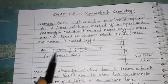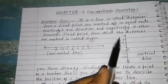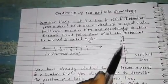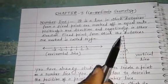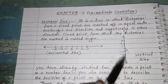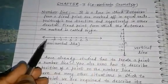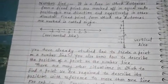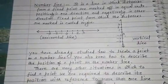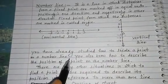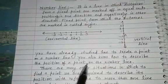You are already aware with the number line. This is also a number line — the direction above shows the positive direction and below is the negative direction, and this is called the vertical line. This is called the horizontal line. We have already studied how to locate a point on a number line and how to describe the position of a point on it.